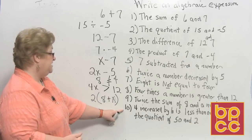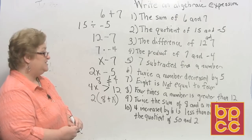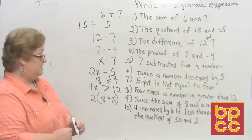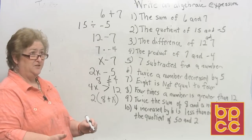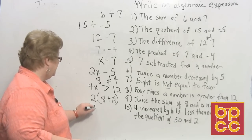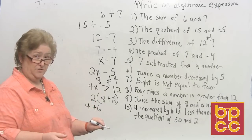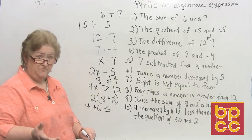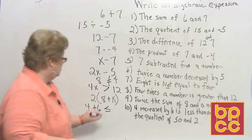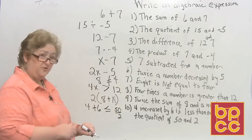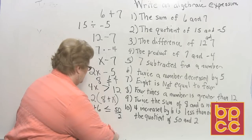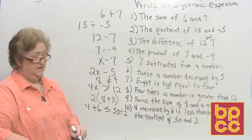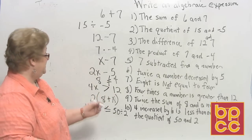On number 10: 4 increased by 6, less than or equal to the quotient of 50 and 2. 4 increased by 6 is addition: 4 plus 6. Then we need the less than or equal to sign. Quotient means division, so the quotient of 50 and 2 can be written as the fraction 50 over 2, or as 50 divided by 2. Either way is perfectly fine. So we have now written all of our sentences as algebraic expressions.